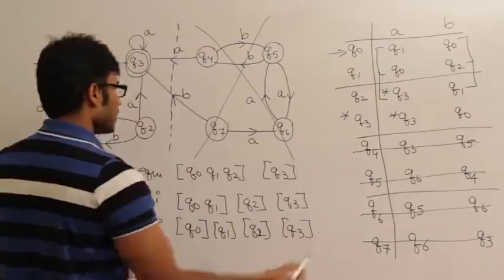So in the given question, we have four states, and in the minimal automata also we have four states. So these four states cannot be reduced, and this is the final answer.